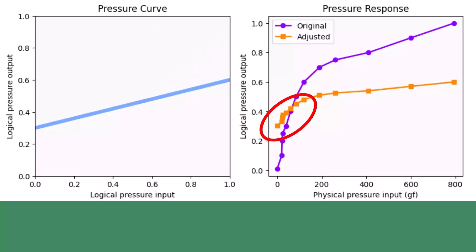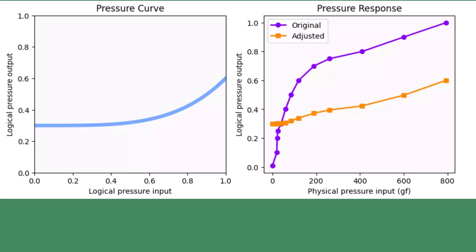There is still a little bit of a problem here — this pressure curve still leaves the pressure response with a remnant of that steeper slope at the beginning. So maybe we want a pressure response that is a little more linear and predictable. We can fix this by bending the pressure curve down while maintaining that constrained output logical pressure range, and now we get back to a more linear pressure response.